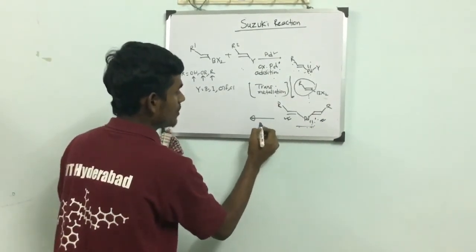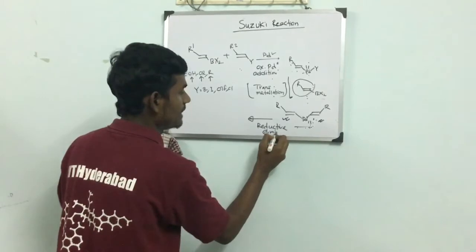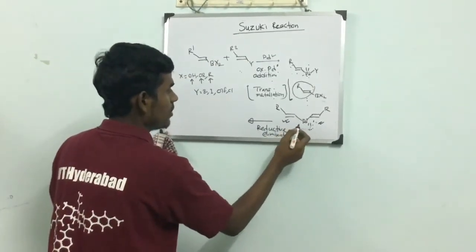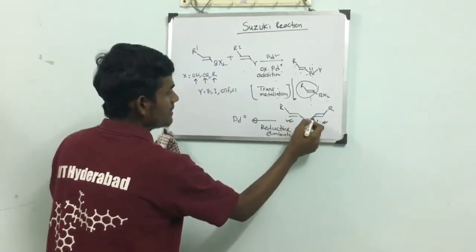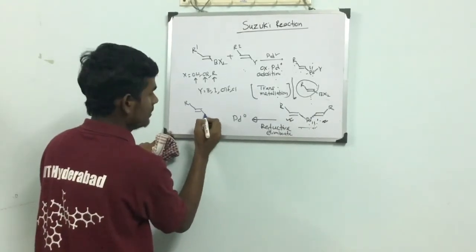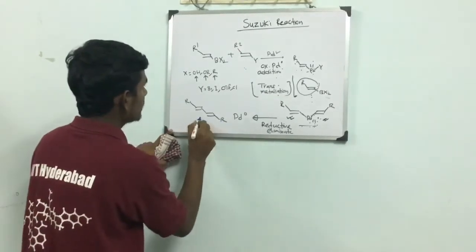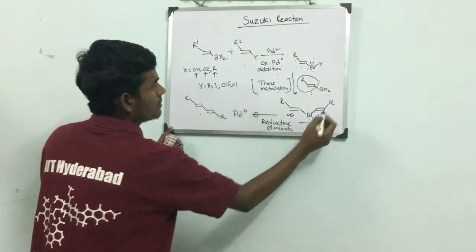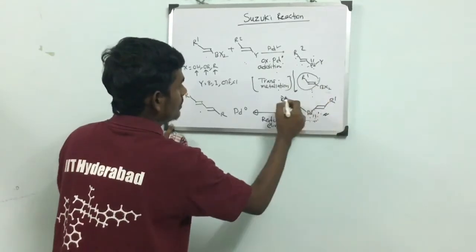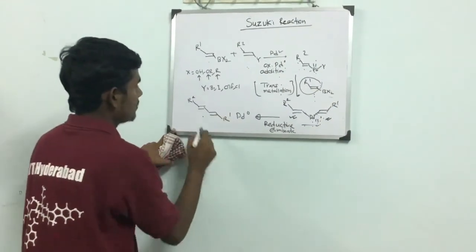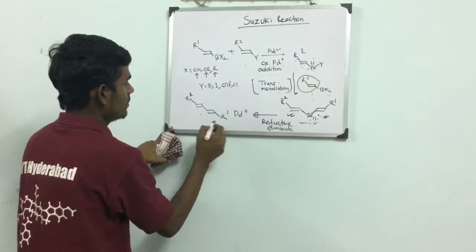Then one more important step - reductive elimination. As its name implies, reductive elimination. Of course something will be eliminated as well as it will be reduction. What goes reduction? It generates palladium 0 species. That is reductive elimination. These double bonds couple. See the product - both the retention in the alkenyl species as well as in the boron species. This is the product.